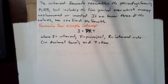The formula for simple interest is I equals PRT, where I equals interest, P equals principal, R equals the interest rate in decimal form, and T equals time.